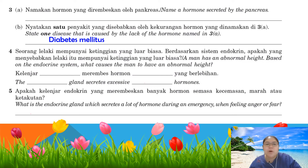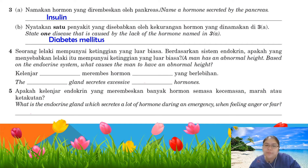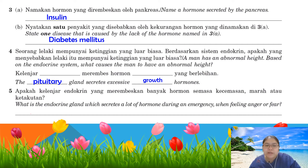Number three: the hormone secreted by the pancreas is insulin. The disease caused by lack of insulin is diabetes mellitus. Number four: a man with abnormal height — based on the endocrine system, this is caused by the pituitary gland secreting excessive growth hormone, making the person a giant. Number five: the endocrine gland that secretes a lot of hormone during an emergency is the adrenal gland.